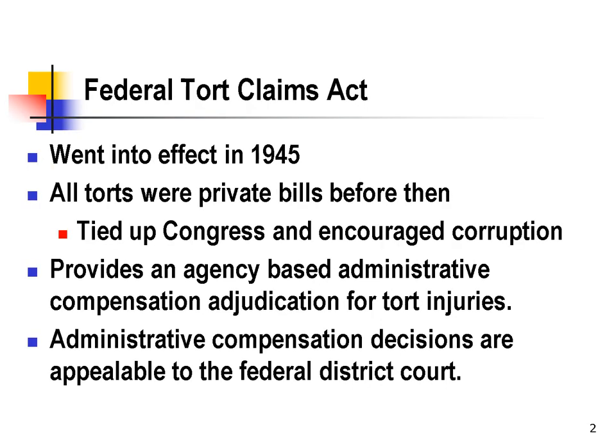The Federal Tort Claims Act was passed in 1945 at the end of World War II. This was the same period when the Administrative Procedure Act was passed. Up until then, all payments for tort damages were paid through private bills sponsored by individual legislators and passed through Congress and signed by the President. There was no judicial or administrative review of the claims, leaving determination of their validity to individual Congresspersons. This took a lot of Congressional time and was also a fertile ground for graft and corruption.